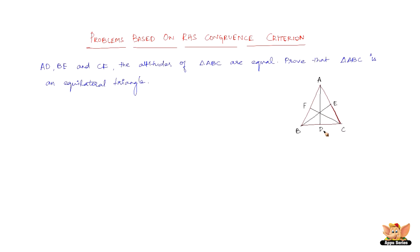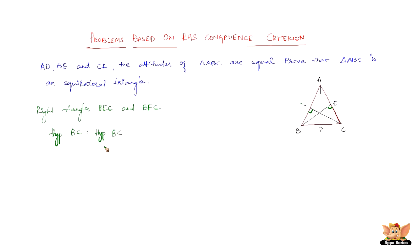Let us consider the right triangles. Right triangles are triangles which have at least one right angle. Consider right triangles BEC and BFC — the right angle is formed because the altitude is perpendicular to the side of the triangle. We have hypotenuse BC equal to hypotenuse BC, because BC is the side shared by both triangles, so it is common.